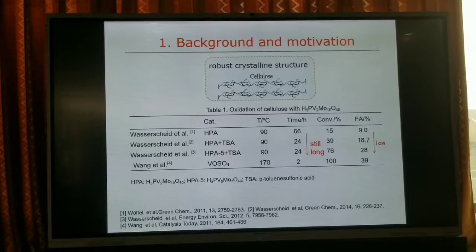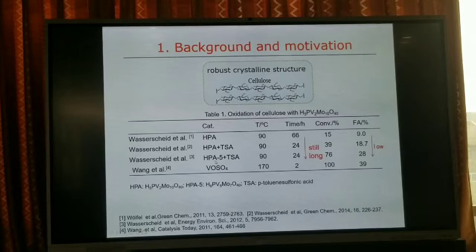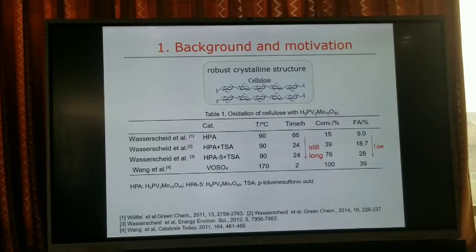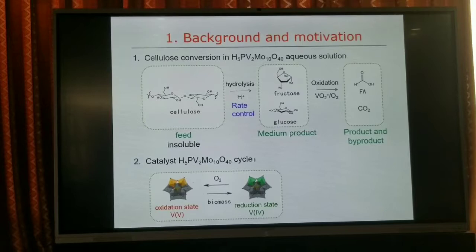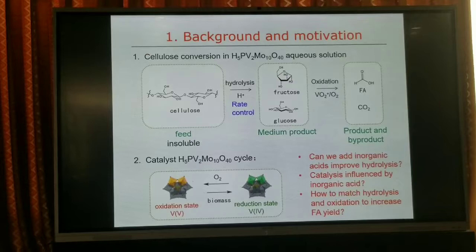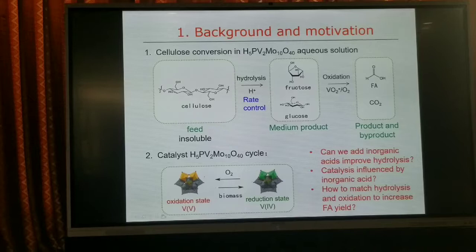Professor Wang developed this kind of catalyst and increased the temperature. They found that the reaction time can be shortened to two hours and the formic acid yield can increase to 39%, but it is still very low. According to the results in the literature, the hydrolysis step is the rate-controlling step. So we asked: can we add inorganic acid, such as sulfuric acid, to the solution to improve the hydrolysis and shorten the reaction time? And if we add inorganic acid, what is its influence on catalytic performance and how to match the two-step hydrolysis and oxidation?